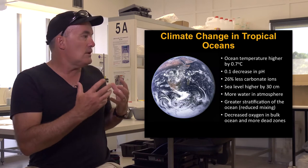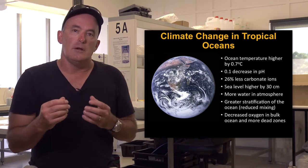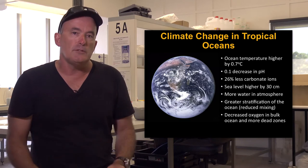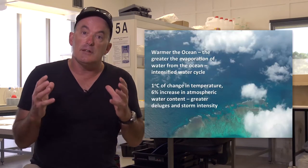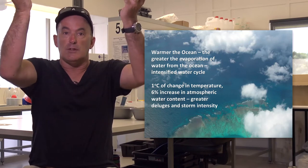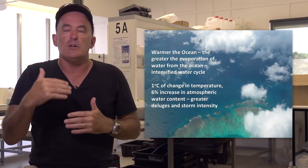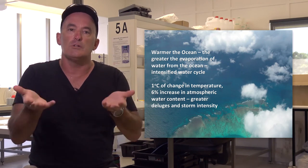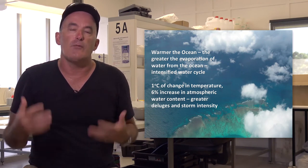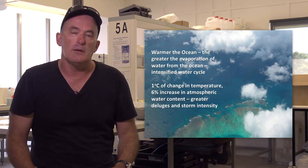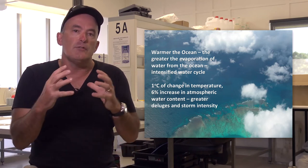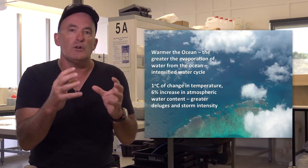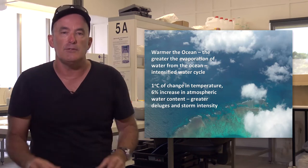In addition to these changes in sea temperature and pH, other aspects of tropical oceans have been changing. The first is that there is now more moisture in the atmosphere, which is leading to more intense rainfall events. This is a consequence of a warmer ocean leading to greater rates of evaporation into the atmosphere. For every degree of planetary warming there is a six percent increase in the water holding capacity of the atmosphere.